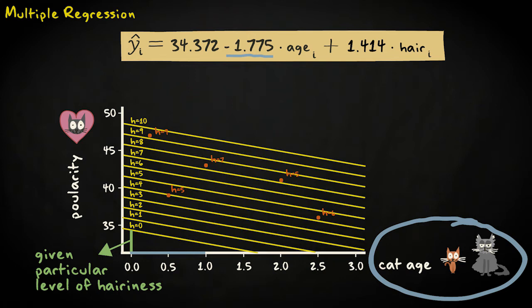It's important to note that the size of each regression coefficient depends on the scale of the predictor. So we can't say that the predictor age, which is larger, is more influential in predicting popularity than the hairiness. Age ranges from 0 to about 15, while hairiness ranges between 0 and 10.